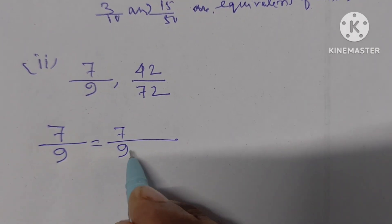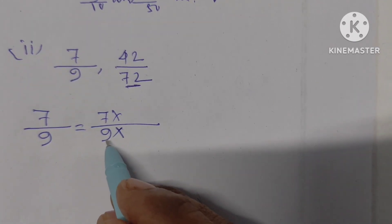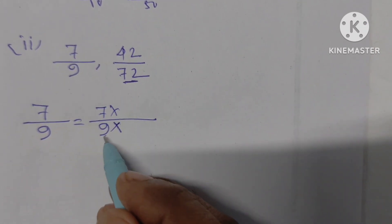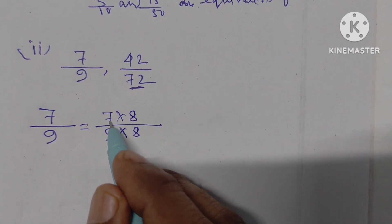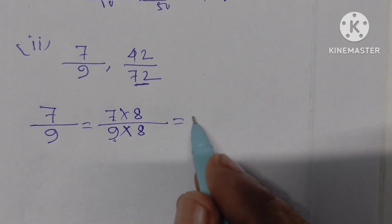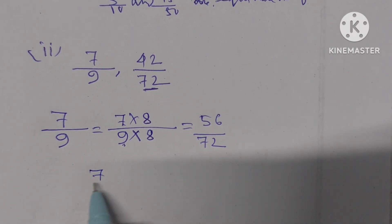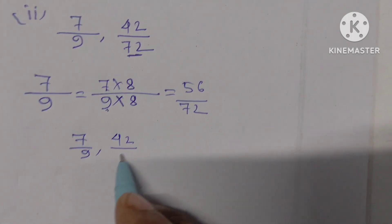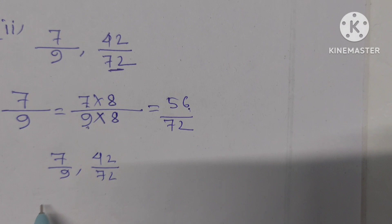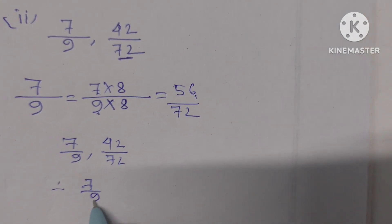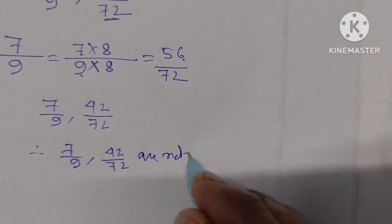Here the denominator is 72 and the other denominator is 9. We know that 8 times 9 is 72, so we multiply by 8. 7 times 8 is 56, 9 times 8 is 72. The pair given is 7 by 9 and 42 by 72, but we have found the numerator should be 56. Therefore 7 by 9 and 42 by 72 are not equivalent.